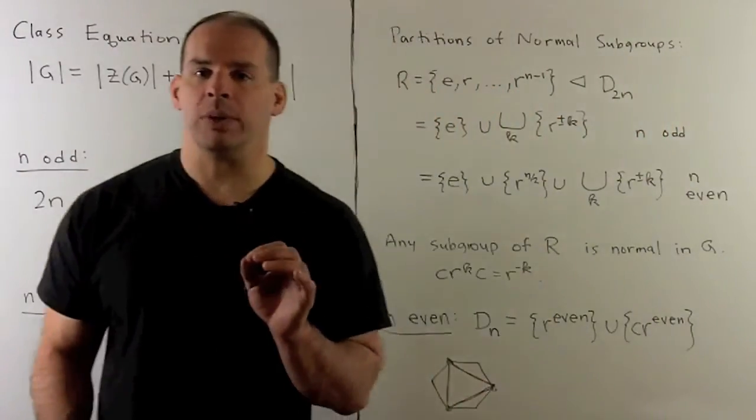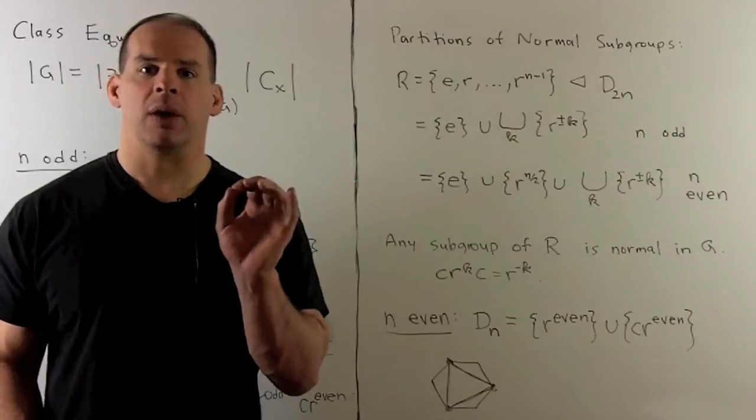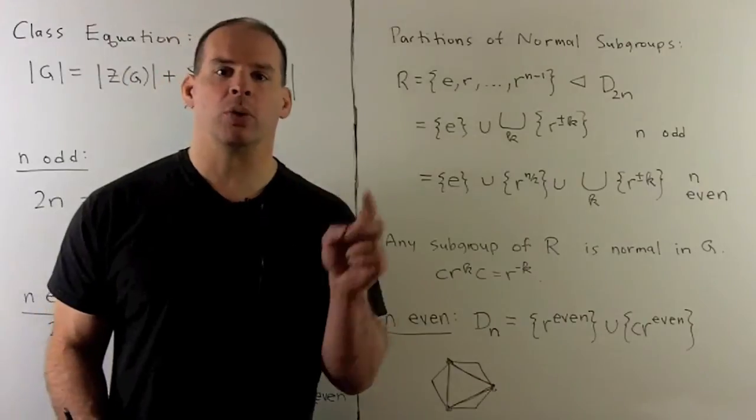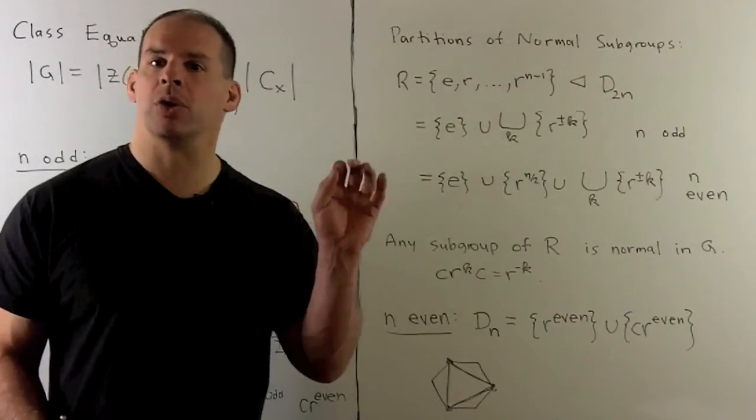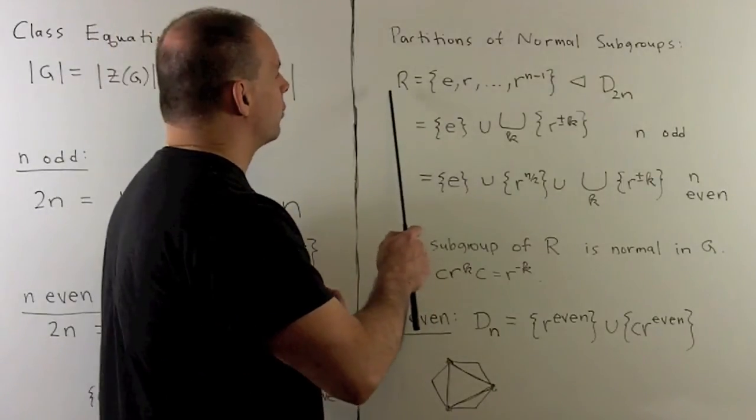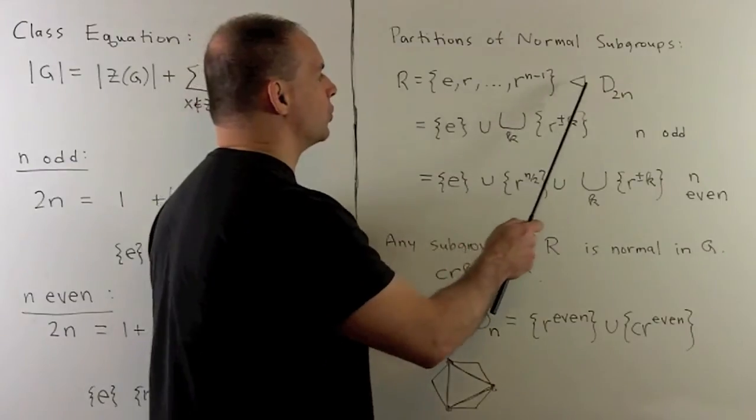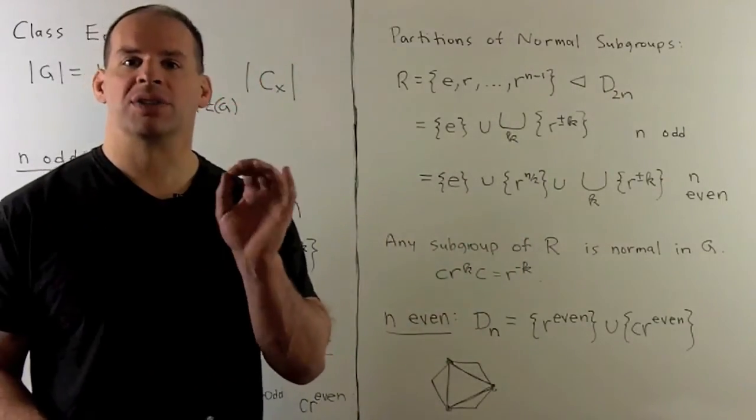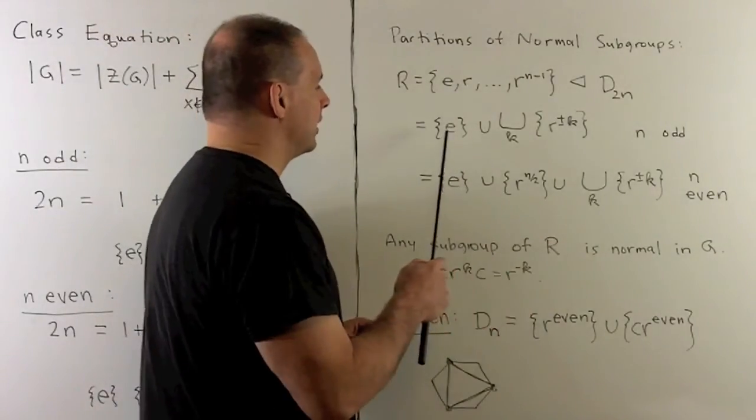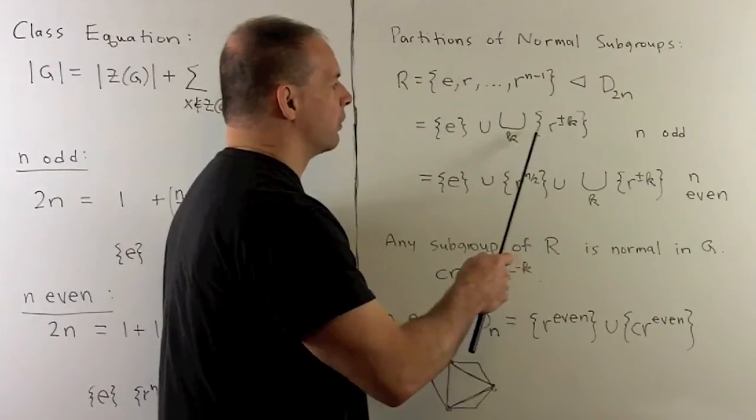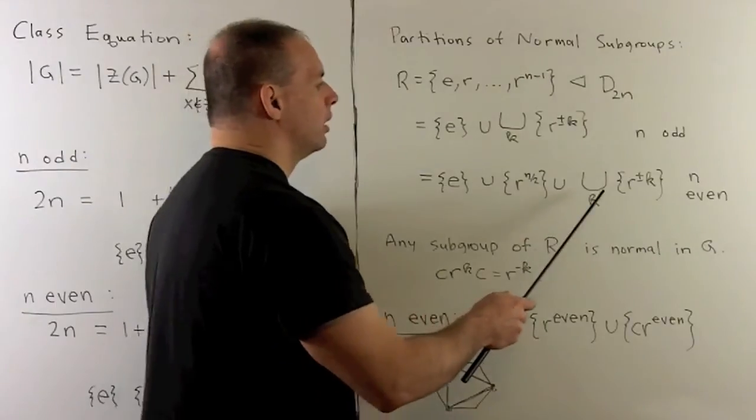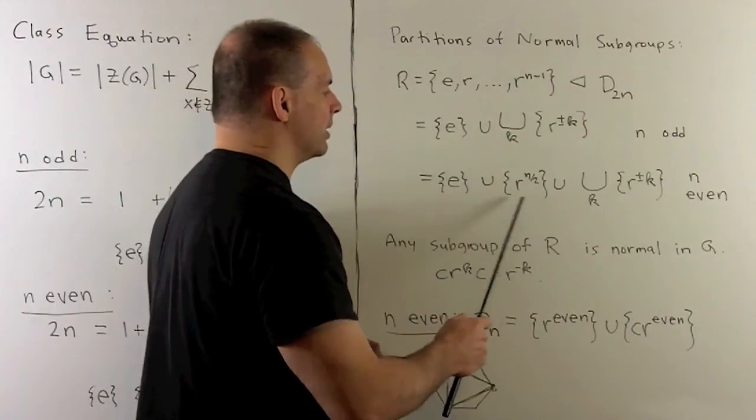One last thing we can do with conjugacy classes, we can put them together to get normal subgroups. Remember, this partition we get on the group from conjugacy classes persists when we look at normal subgroups in the group. For instance, if I take the rotation subgroup, that is index 2, so it's normal. I can express that as sum of conjugacy classes. When n is odd, take the identity class, and then we're going to put in each of these inverse pairs. When n is even, same idea. We have inverse pairs, we have the identity, and then we have the element in the center.